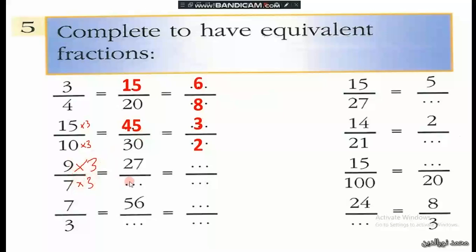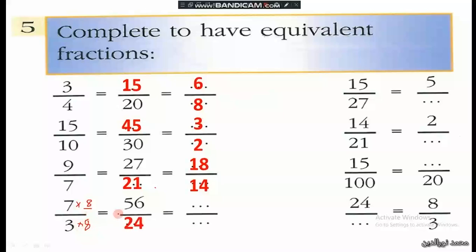Here we have 9 multiplied by 3 to get 27, so 7 multiplied by 3 is 21. Then 9 multiplied by 2 is 18, and 7 times 2 is 14. In this example, 7 over 3 multiplied by 2 gives 14 over 6, since 7 times 2 is 14 and 3 times 2 is 6. All these fractions are equivalent.